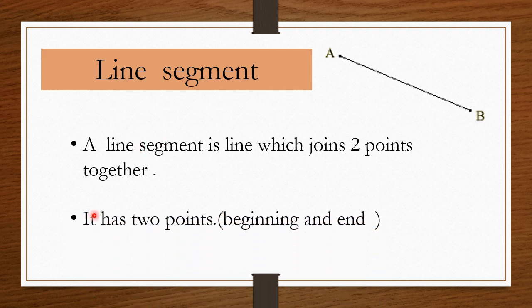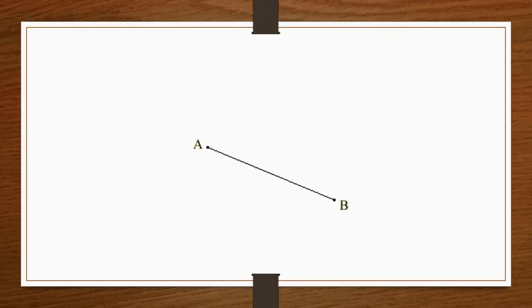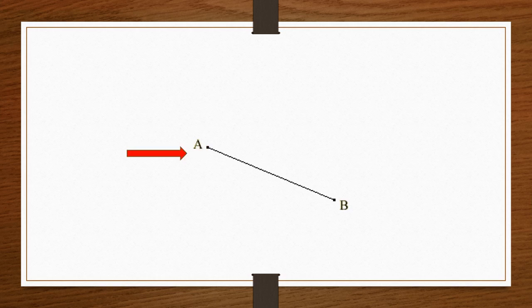It has two points, beginning and end. This point from where we start to make a line is called the beginning point and where it ends is called the end point.